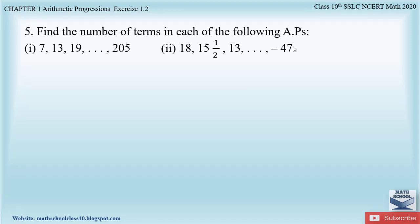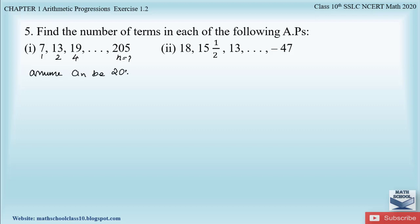There are two parts to question five. For part one, we are given an AP and we must find the number of terms n. The first term, second term, third term and the nth term are identified. We assume the nth term equals 205 and we need to find the value of n.